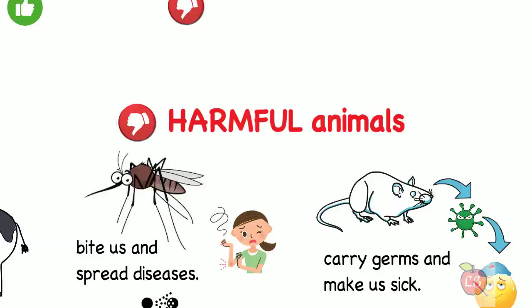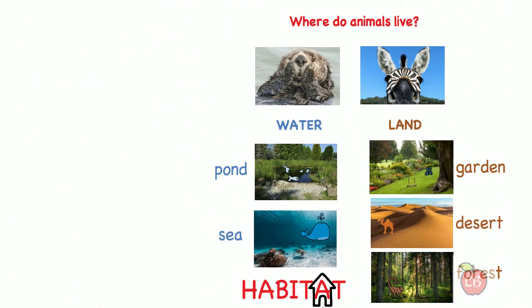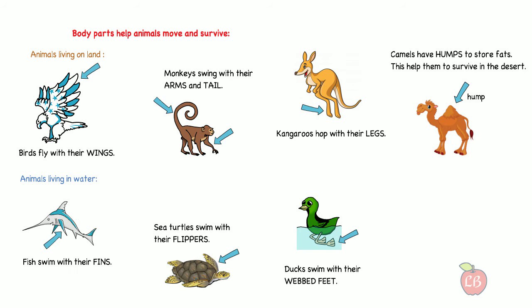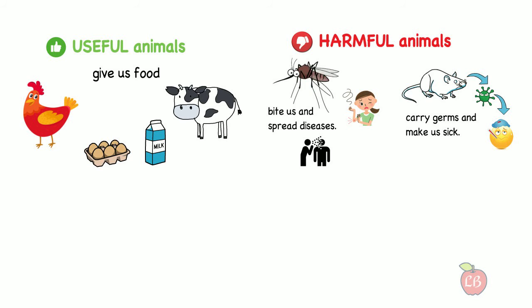So, what have we learned about animals today? Well, they live in different habitats, they have different body parts, and they can be useful or harmful.